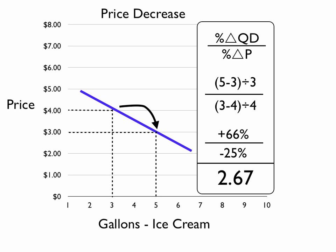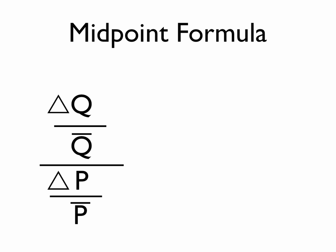We call that the midpoint formula. This formula is described as the change in Q divided by the average Q, divided by the change in P over the average P. Or we could also refer to it as delta Q over Q bar—a little bar above the Q means it's the average quantity—divided by delta P over P bar. So if we wanted to say it real fast, we could simply say delta Q over Q bar divided by delta P over P bar.